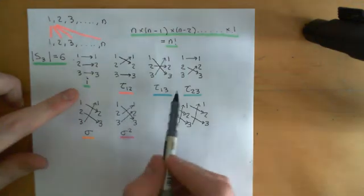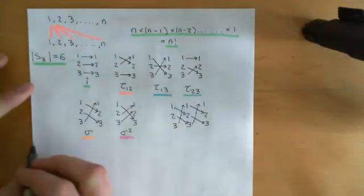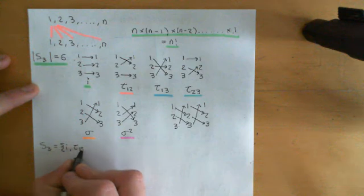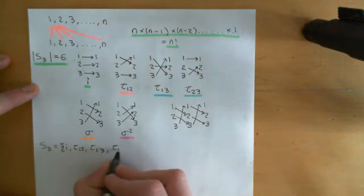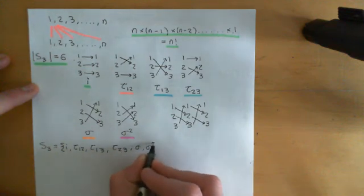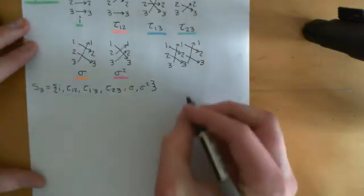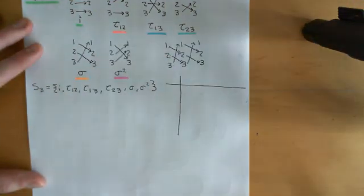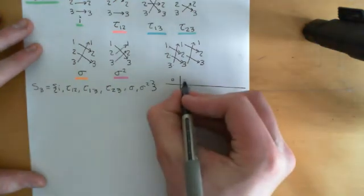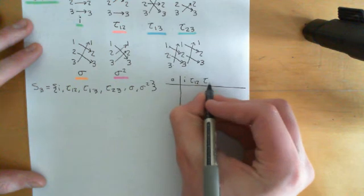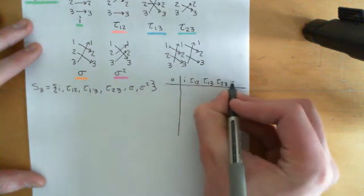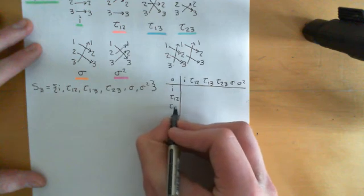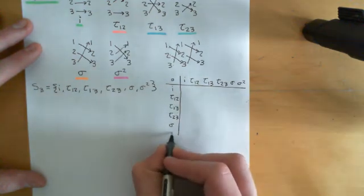Those are the six different permutations — this is S3, and we have names for all of them: I, tau(1,2), tau(1,3), tau(2,3), sigma, and sigma squared. Now I'm going to define a composition law on that set, working out what any two elements composed together gives by composing their set permutations. I'll call this abstract composition and set up a composition table with all six elements along both axes.